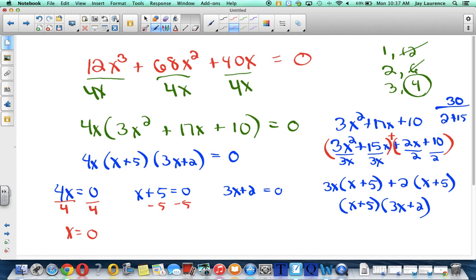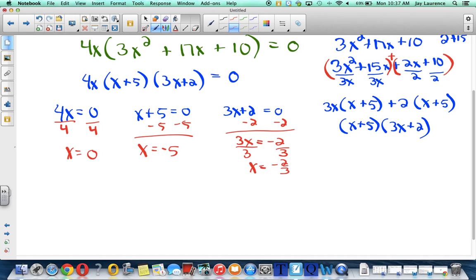Subtract 5. That's going to equal negative 5. And subtract 2. 3x is going to equal negative 2. Divide by 3. Divide by 3. x is going to equal negative 2 thirds. So my solution set for this would be negative 5, negative 2 thirds, and 0. And there you go.